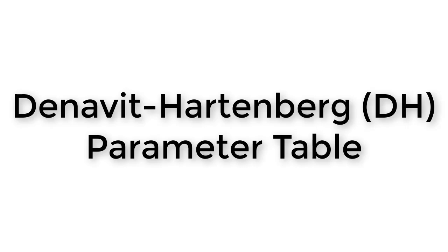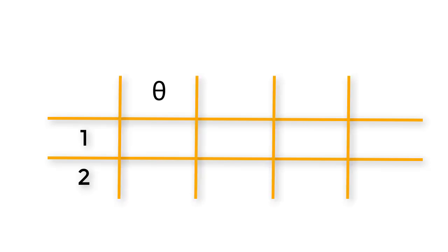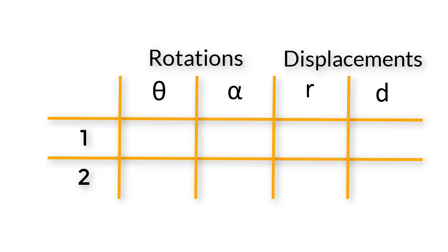Once we have frames drawn on our kinematic diagrams, the next step on the way to getting the homogeneous transformation matrix is to create the DH parameter table. The DH parameter table records all of the displacement and rotation relationships between each pair of frames. It has one fewer rows than we have frames, because we have one row for each pair of frames. The table has four columns, one for each parameter. These four parameters include everything we need to express both the displacement and the rotation between two frames, so if we know these parameters for each pair of frames, then we can get the homogeneous transformation matrix directly.